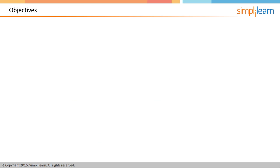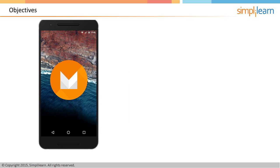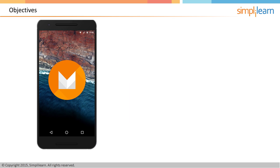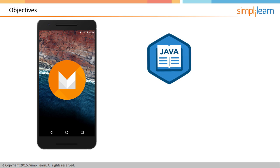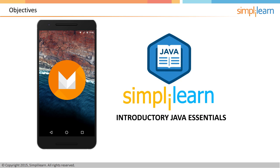What is the objective of this course? This course is intended for people who want to create native applications on Android. It is necessary that you have a good understanding of Java before getting started on this path. If you don't know Java, please consider taking the Introductory Java Essentials course from Simply Learn.